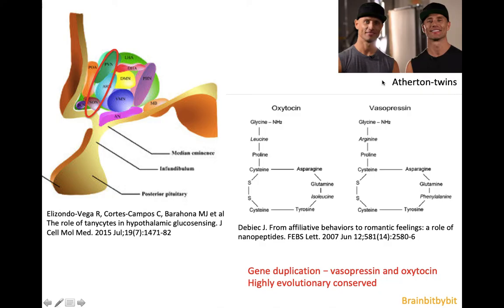A picture of two circus artists — the Eterton twins, who are identical twins — illustrates that oxytocin and vasopressin are similarly related. They are formed by gene duplication: in evolution, a gene was duplicated, and one copy kept producing the original protein while the other had mutations and produced a slightly different protein. Vasopressin and oxytocin are highly evolutionarily conserved, and as mentioned in vlogs about focal cortical dysplasia and the mTOR pathway, if something is highly evolutionarily conserved, it's very important for the organism.